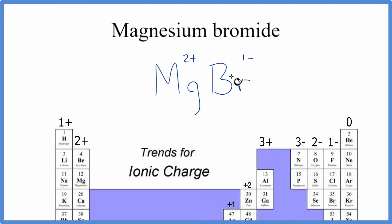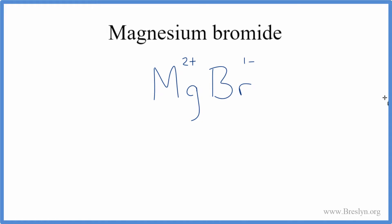So these charges need to add up to 0, so right now the net charge is not 0, so these aren't balanced out. To do that, we can use what's called the crisscross method.